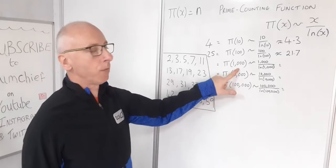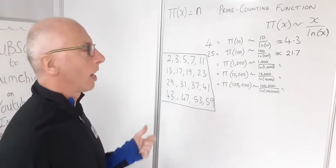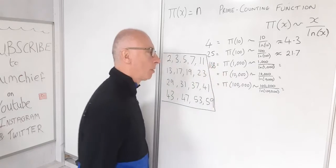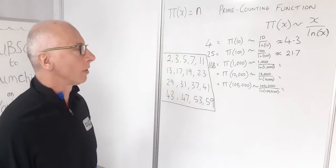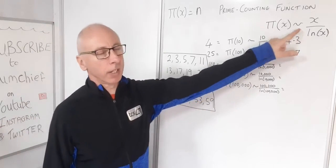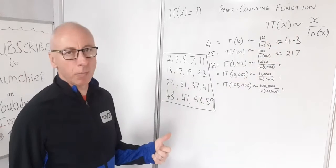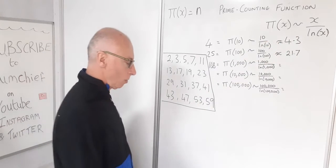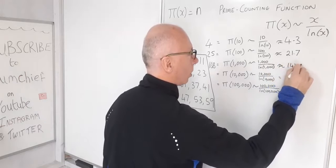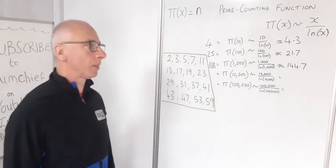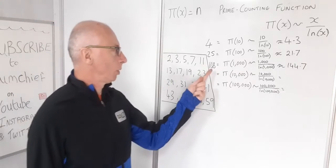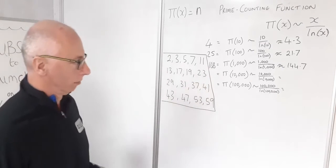What about π(1000)? How many prime numbers are there up to 1000? Well there is 168 prime numbers up to 1000. What does this approximation formula give us? If we plug this into our calculator, we will get approximately 144.7. So again, it's going in the right direction, but we're still not on the 168, but it's close.